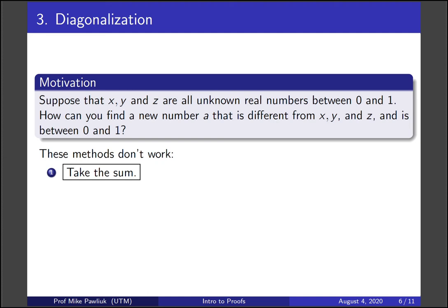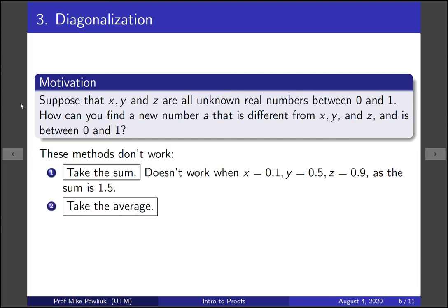Well, here are some plausible methods that don't work. For example, taking the sum. Take the sum of the first three numbers. Well, that'll have to be different from all three of those. So won't that work? Well, it doesn't work when x is 0.1, y is 0.5, and z is 0.9, as the sum will be too big. So it won't be between 0 and 1. Even if you decide to cut off everything after the decimal point, you'll end up with 0.5, which might accidentally be in your list. So this method doesn't work. Another thing that students often suggest is take the average. Well, for these three same numbers, the average will actually be in the set already. So these two methods don't work for finding a new number on the list.